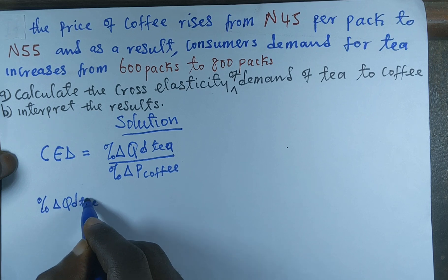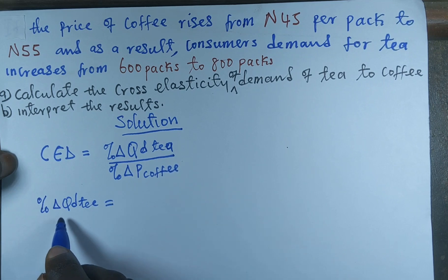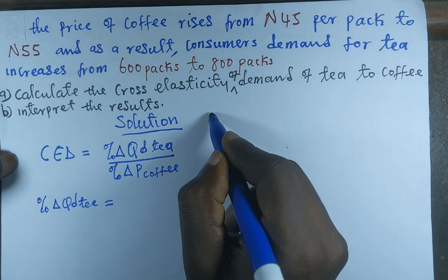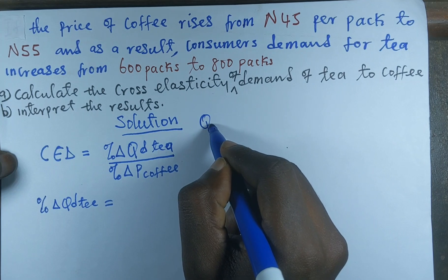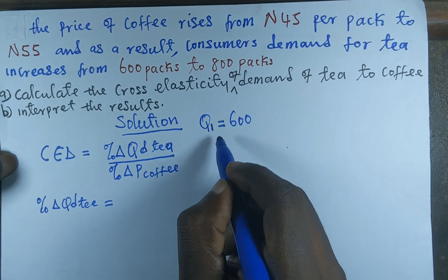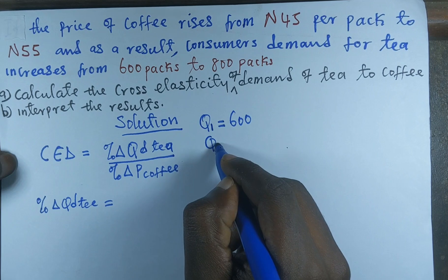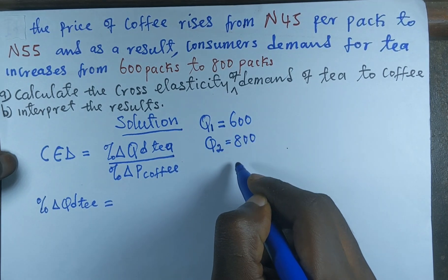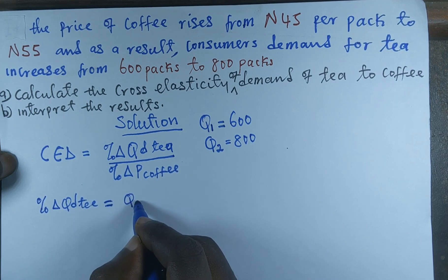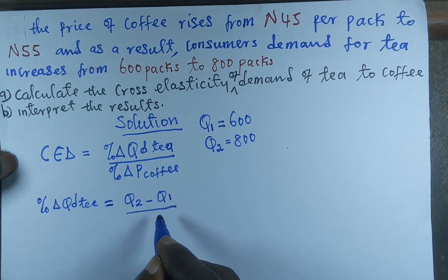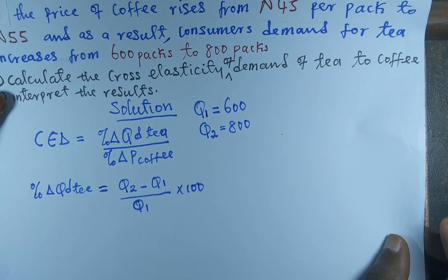Before we continue, let me identify the key variables. The initial quantity, Q1, is equal to 600 packs, and the final quantity demanded — as a result of the increasing price of coffee — Q2, is equal to 800 packs. The formula for percentage change in quantity demanded is: Q2 minus Q1, all divided by Q1, multiplied by 100.